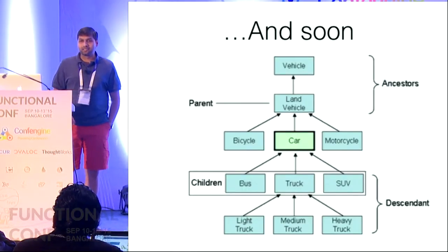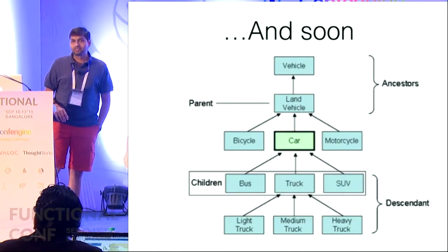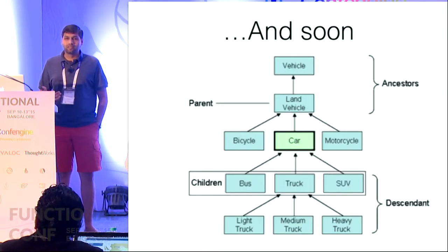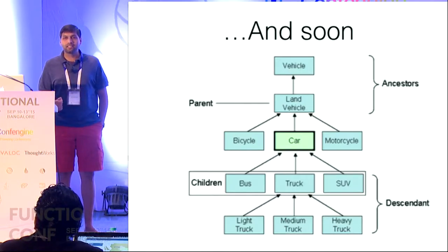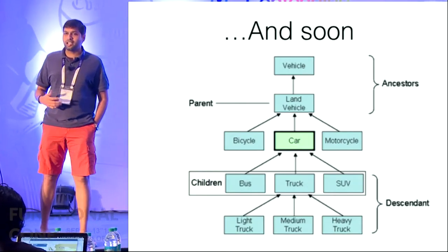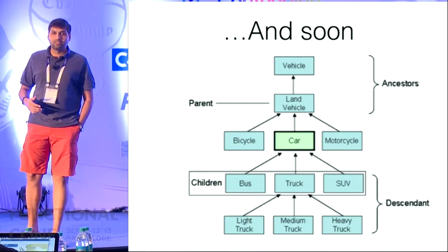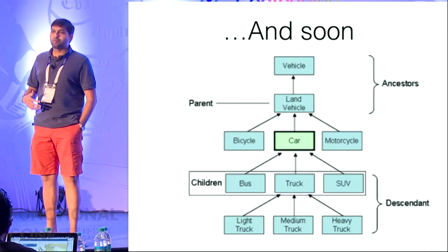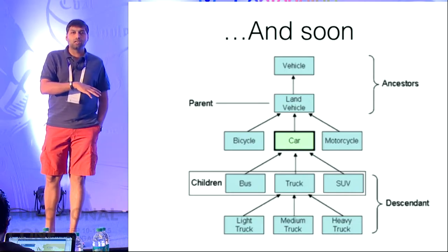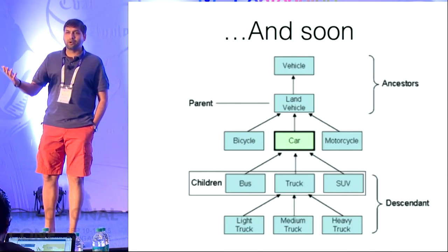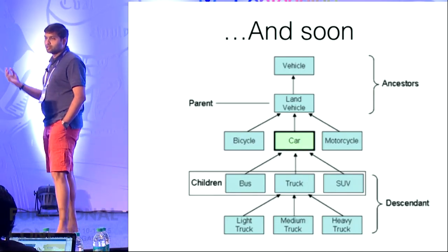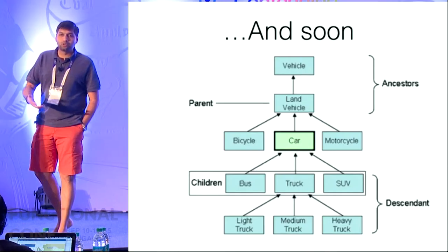You end up with stuff like this — suddenly a truck is inheriting from a car because it has to reuse some of the functionality that is there in the car, or you have all kinds of other deep nested hierarchies and problems that don't make sense. You end up doing that because you originally started by trying to model your software on the real world, and at some point that fell off but you wanted to reuse code and you ended up bending over backwards to get stuff done.